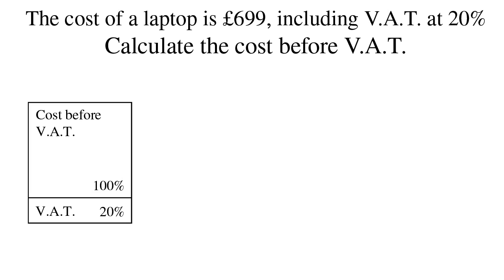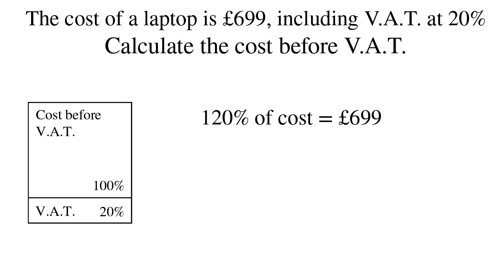So what we need to do is write that down mathematically. 120% of the cost is £699. Remember, we have to work out 100%.